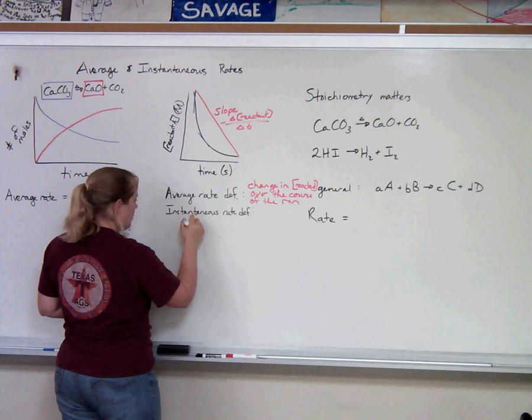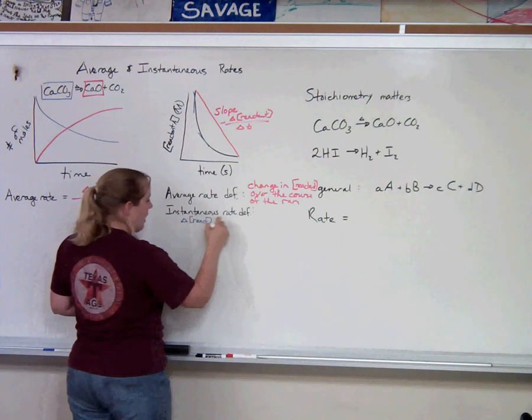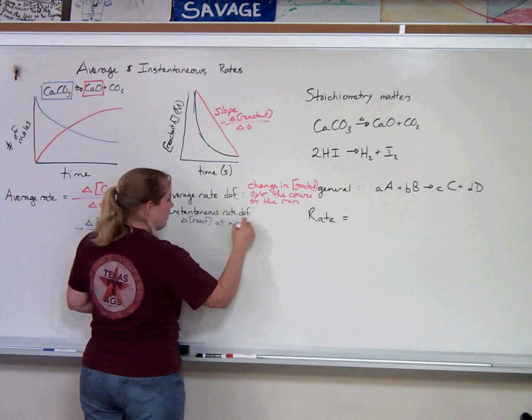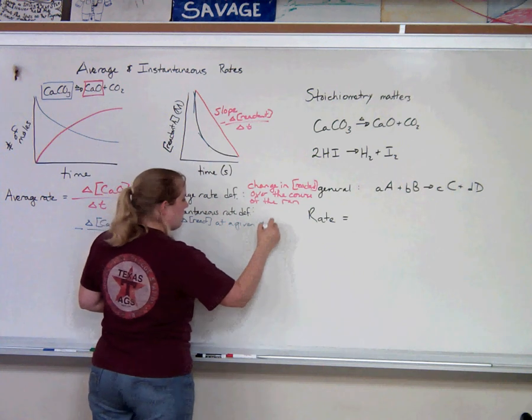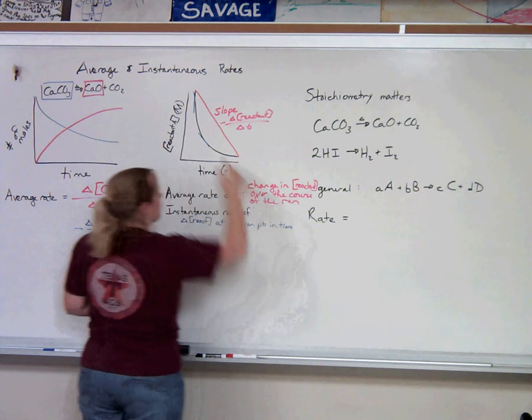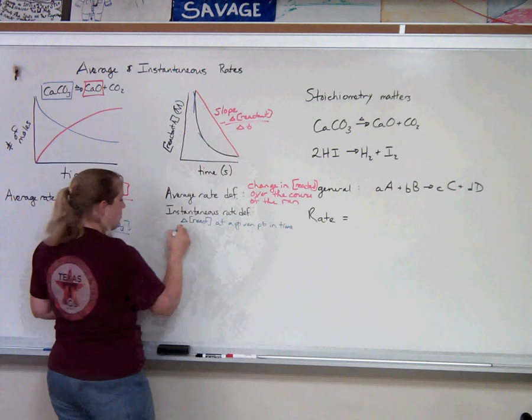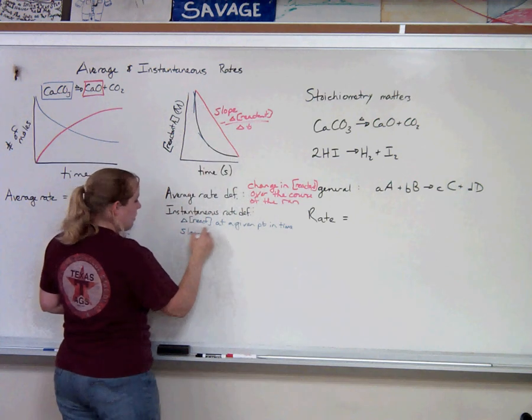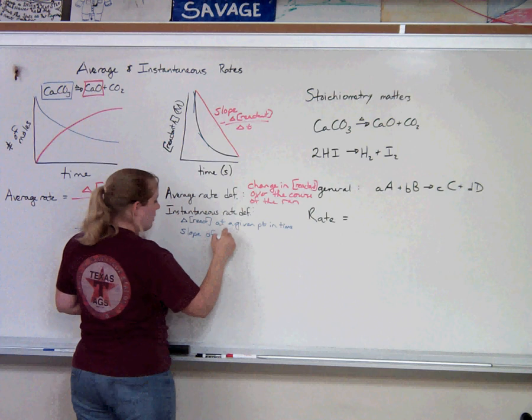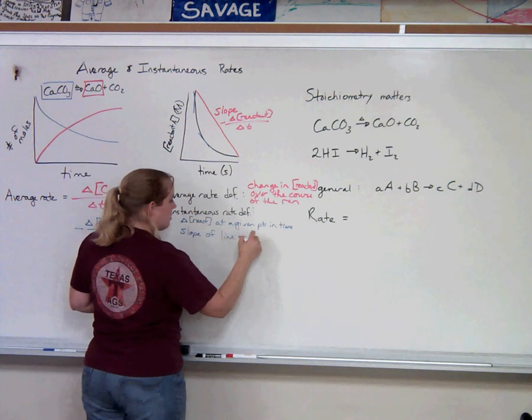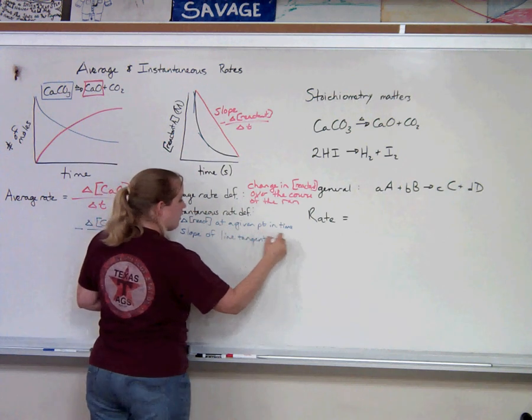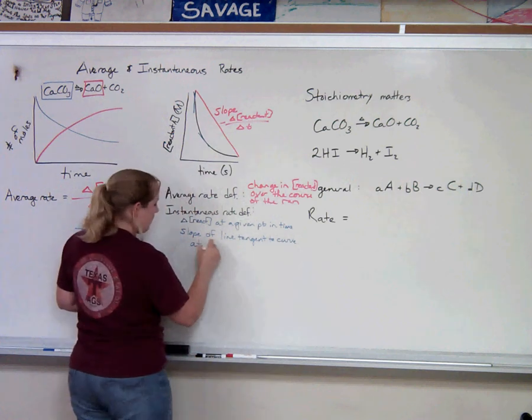The instantaneous rate would be the change in reactant concentration at a given point in time. So this would be the slope of the entire curve. This would be the slope of a line tangent to the curve at a given point.